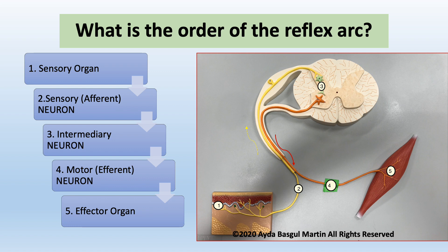Let's repeat the order of the reflex arc and show those components on the polysynaptic reflex arc model. First, sensory organ — think about it: if there is a hot surface and you put your skin on it, your skin is your first sensory organ, labeled number one. The information is carried to the spinal cord through the sensory neuron, labeled number two. The interneuron — also called intermediary neuron — is third in line and is color-coded green, labeled number three. The motor neuron is color-coded red and labeled number four. The effector organ is number five.